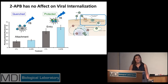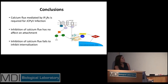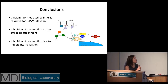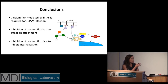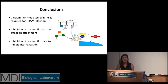This leaves us with the question of what is actually going on. My conclusions are that calcium flux, mediated specifically by IP3 and IP3 receptor interactions, is required for JC infection, and that inhibition of calcium flux has no effect on attachment or internalization. For future experiments, I would like to examine whether the reduction of activated calcineurin and therefore the reduction of NFAT migration to the nucleus plays a role in the virus's inability to replicate with this reduction of calcium flux.